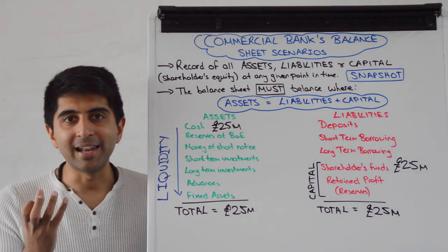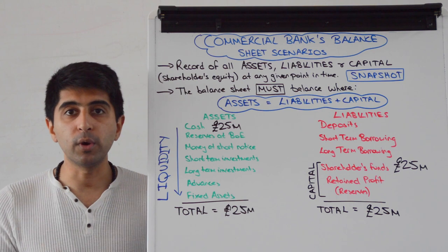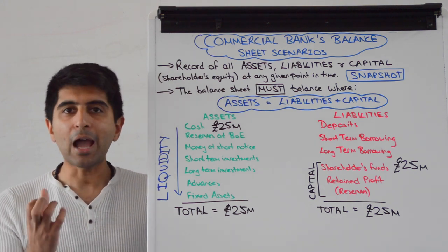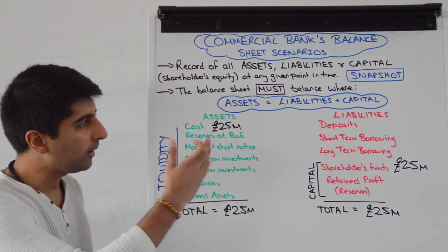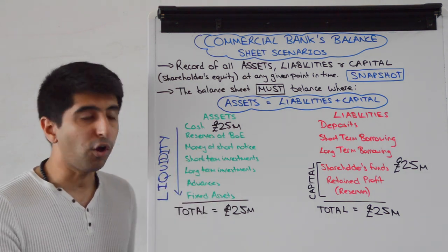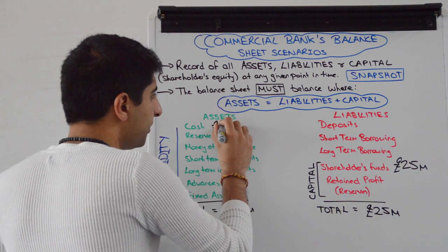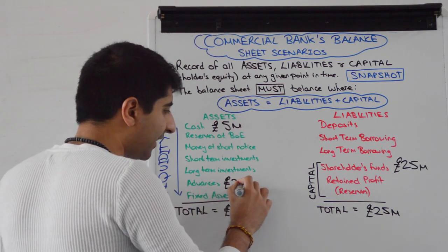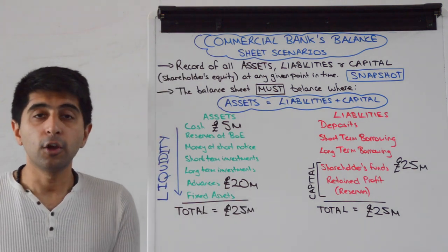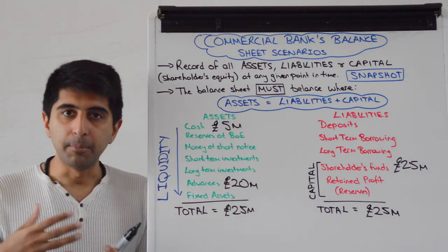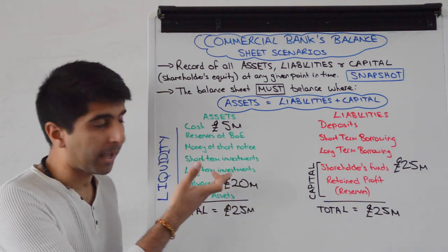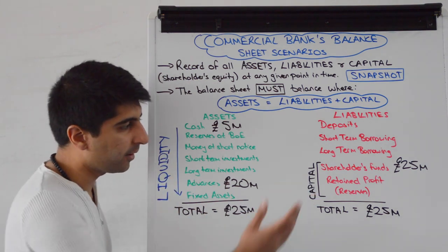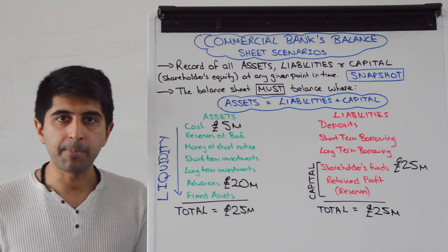The bank now decides to lend 20 million pounds worth of this money out in the form of mortgages and other loans. How will this be recorded on the balance sheet? It's going to be 20 million pounds off cash, leaving 5 million pounds, and 20 million pounds will go into advances. Remember, advances constitute loans and mortgages. We've got 25 million pounds of assets and 25 million pounds of liabilities — a balanced balance sheet.